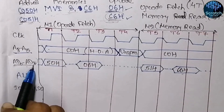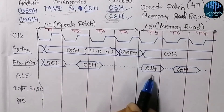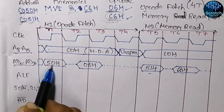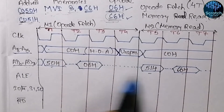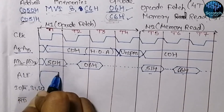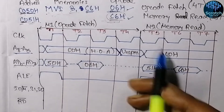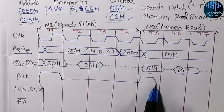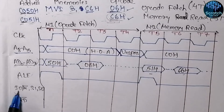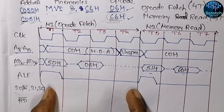Now comes the ALE, that is the Address Latch Enable signal. When ALE is high, the AD0–AD7 lines act as address lines. In T1 of the opcode fetch and in T5 (the first T-state of the memory read cycle), the AD0–AD7 lines are storing the lower-order address, so ALE will be high during T1 and also during T5. It will then remain low.